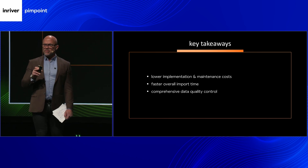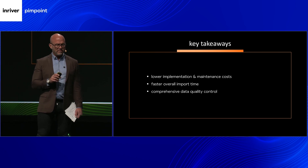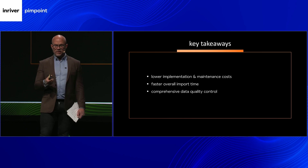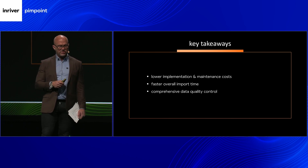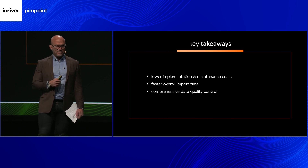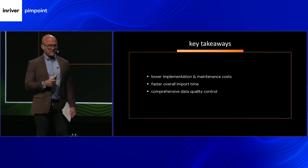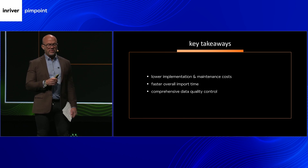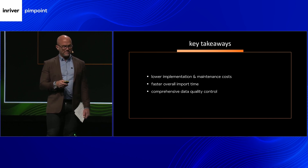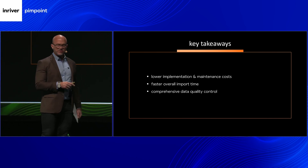Three things to take away from this session: First, skip the custom integrations — content onboarding handles the transformation for you, cutting down both setup cost and operational cost. Second, speed up your data imports — with the in River landing area, file acceptance, ticket tracking, validation, and processing, the time spent on data imports will lessen significantly. Third, in River provides you with a comprehensive data quality tool in the staging area to ensure only proper data comes into your PIM. Thank you very much.